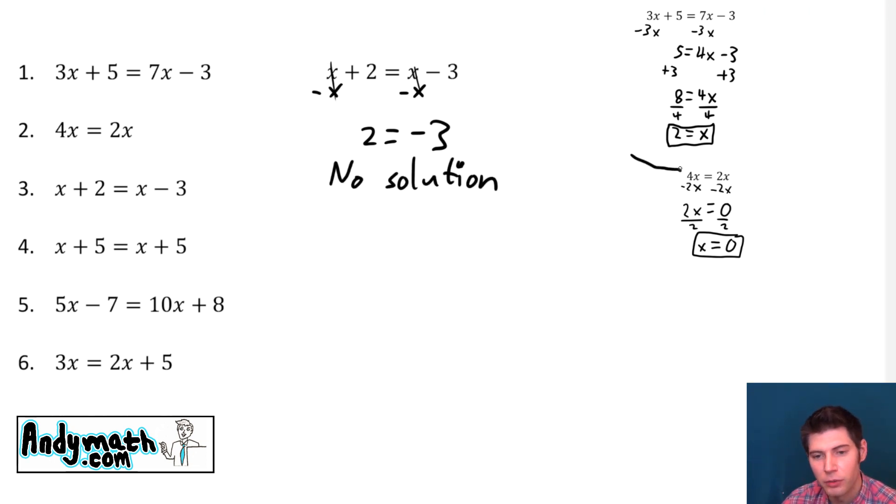It was fine over here when we saw 4x equals 2x. That still had a solution because of the x's—they could be zero. But this is just 2 equals negative 3, which is not true. There's no way to make that true.